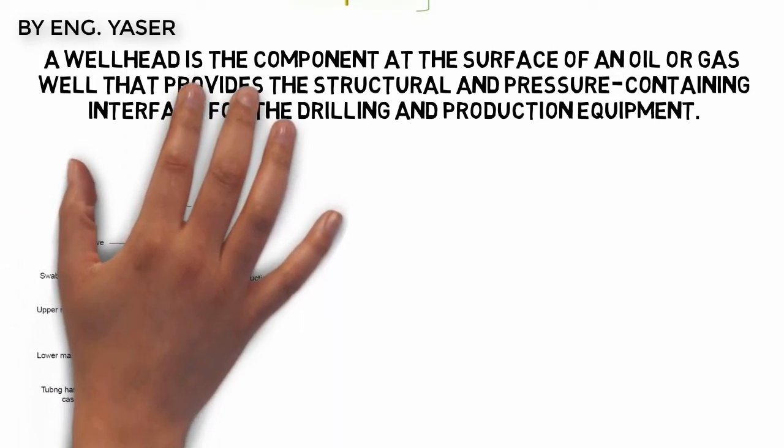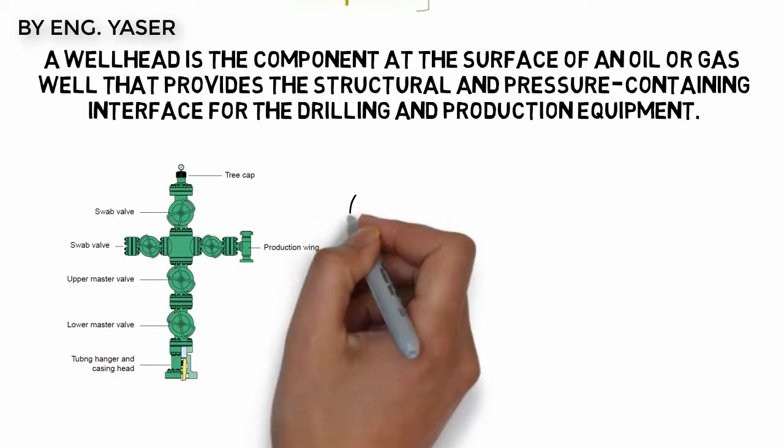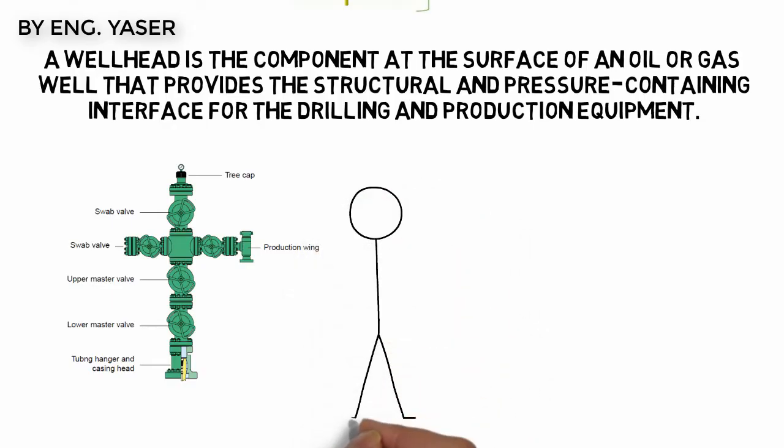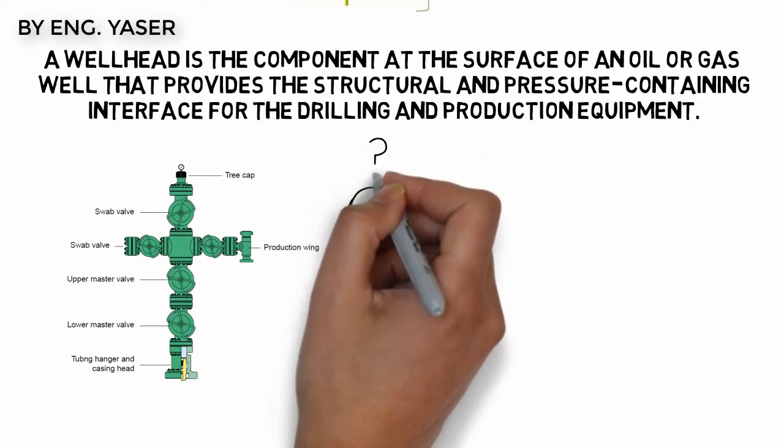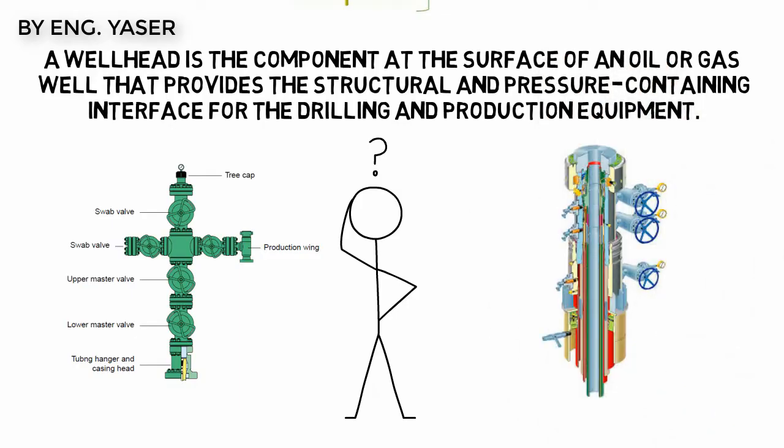Some people misunderstand the wellhead terms. We refer to the downside where the tubing is hung as the wellhead, which also provides the connection point between tubing and Christmas tree. The upper part is the Christmas tree.